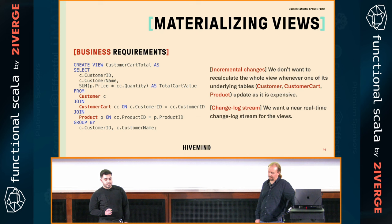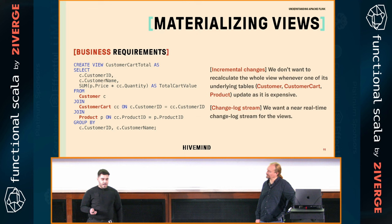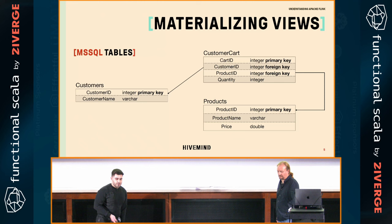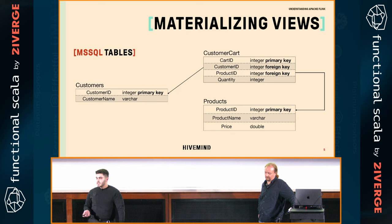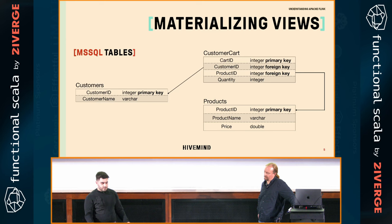There was also another problem we had to solve: we needed a change log stream for the view. For the sake of the presentation, this is a simplified example — a SQL Server database with a customers table, where each customer has a cart, and each cart has a product. The cart has a quantity and points to a product, and a product has a price.